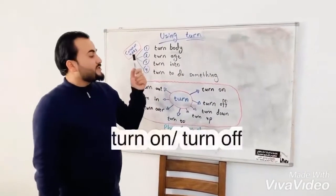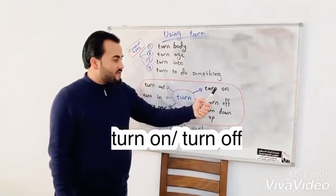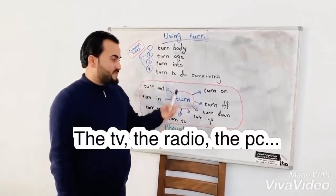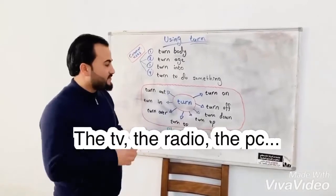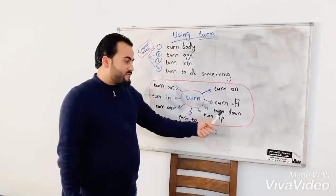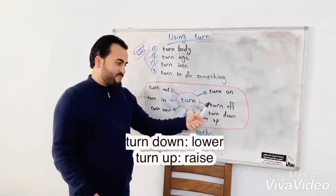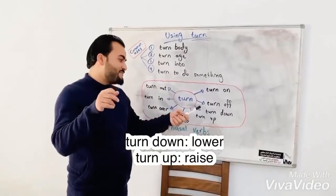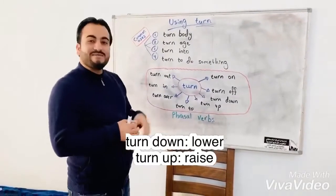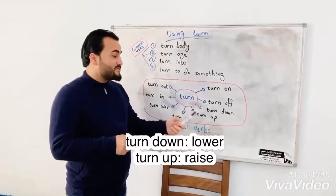Let's start with 'turn on' and 'turn off' — turn on or off the TV, the radio, the PC, and any other things. Next: 'turn down' and 'turn up'. For example, 'Can you turn down the TV please?'